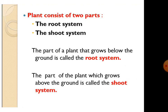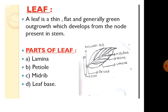So, a plant consists of two parts: the root system and the shoot system. The part of a plant that grows below the ground is called the root system, and the part above is the shoot system.